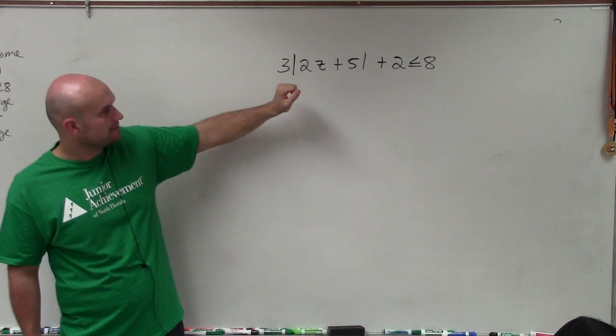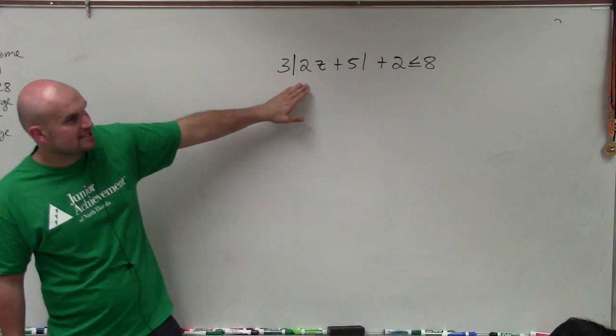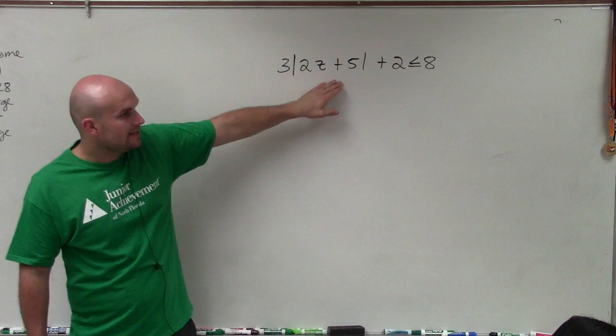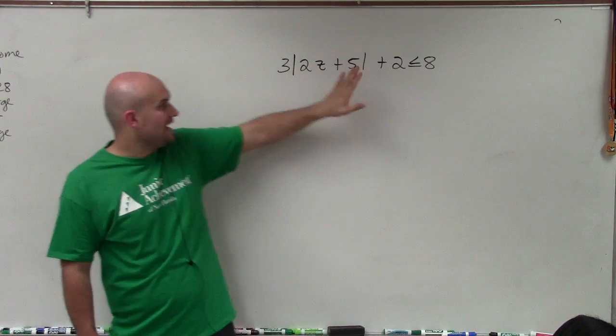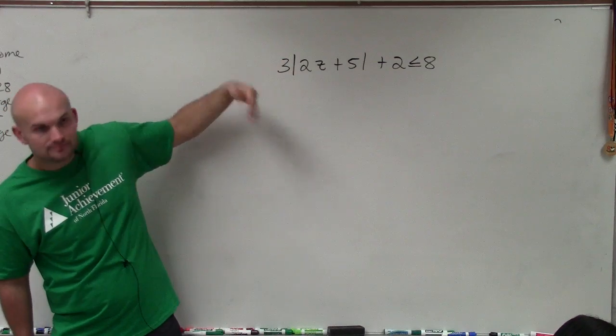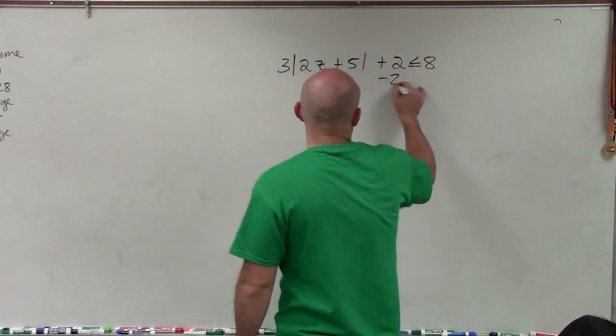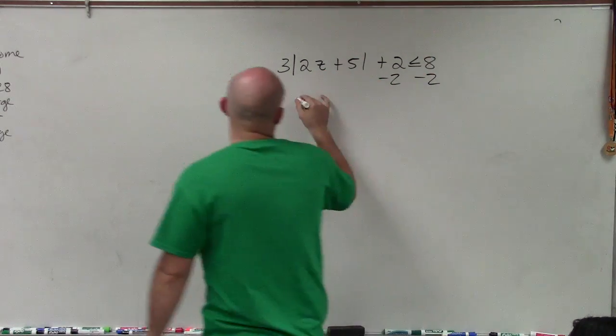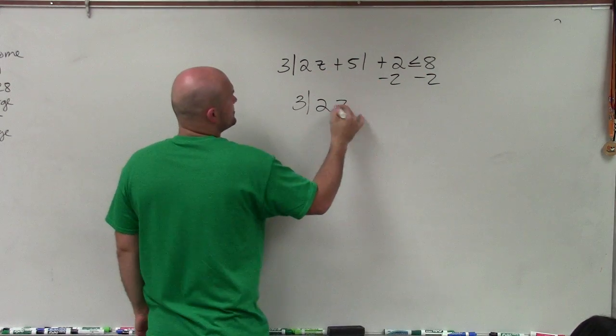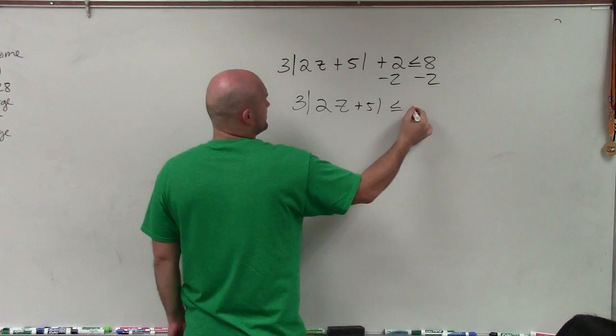That's 2z. So what we notice is this absolute value sign is being added by 2 and it's being multiplied by 3. So to undo those operations, I'm going to subtract 2 on both sides and I have 3 times |2z + 5| is less than or equal to 6.